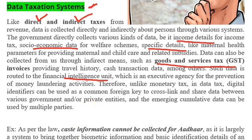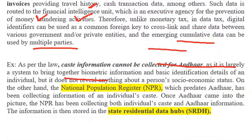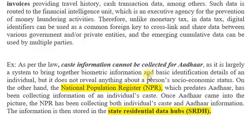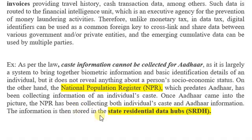As an example: as per law, caste information can be collected by Aadhaar since it is largely a system to bring together biometric information and basic identification details of an individual, but it does not reveal anything about a person's socio-economic status. On the other hand, the National Population Register similarly collects caste information. Once Aadhaar came into existence, the NPR has been collecting both caste details and Aadhaar details, and this information is stored in State Residential Data Hubs.